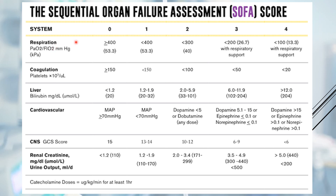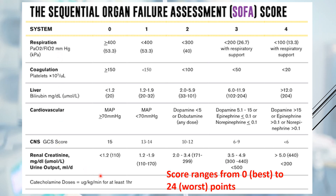This table shows the values and how the scoring is done. If the score is zero, it is almost normal with no organ dysfunction, whereas four is the highest value, indicating major organ dysfunction. We calculate each variable and score it according to which category it falls under. For example, if PaO2 by FiO2 ratio is less than 400, it is given one point; if it is less than 300, it is given two points. This is applicable to all other systems. The lowest total score is zero and the highest, representing the worst prognosis, is 24.